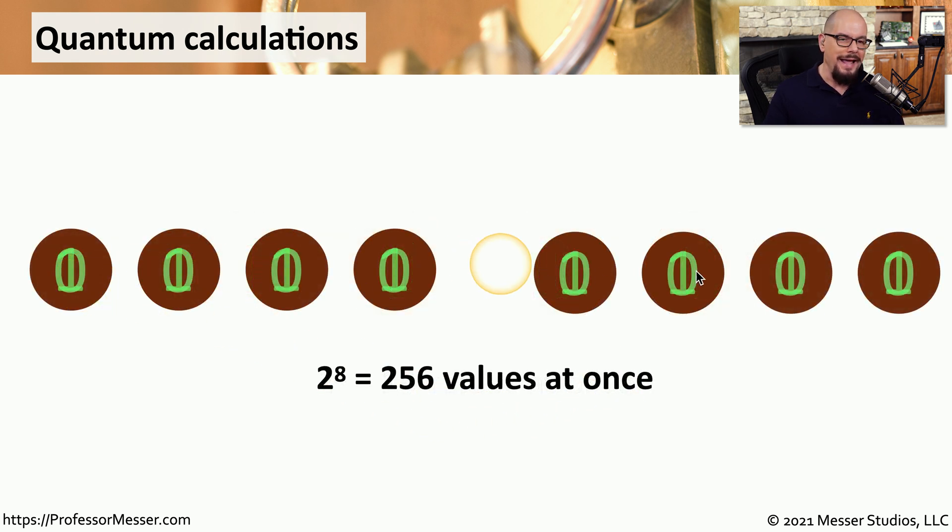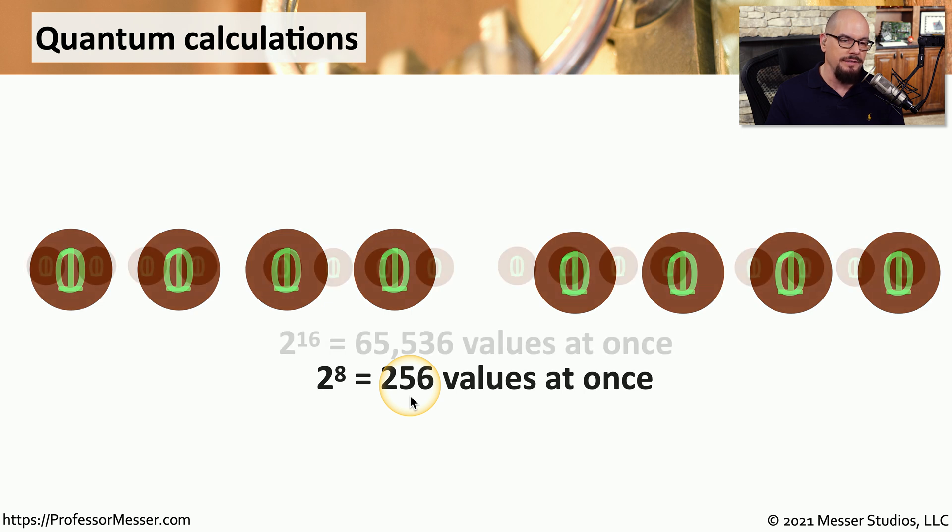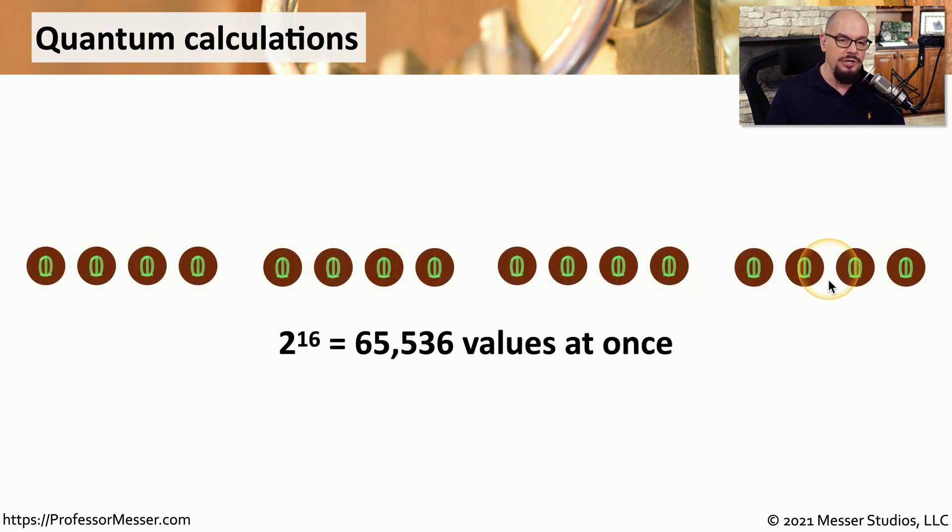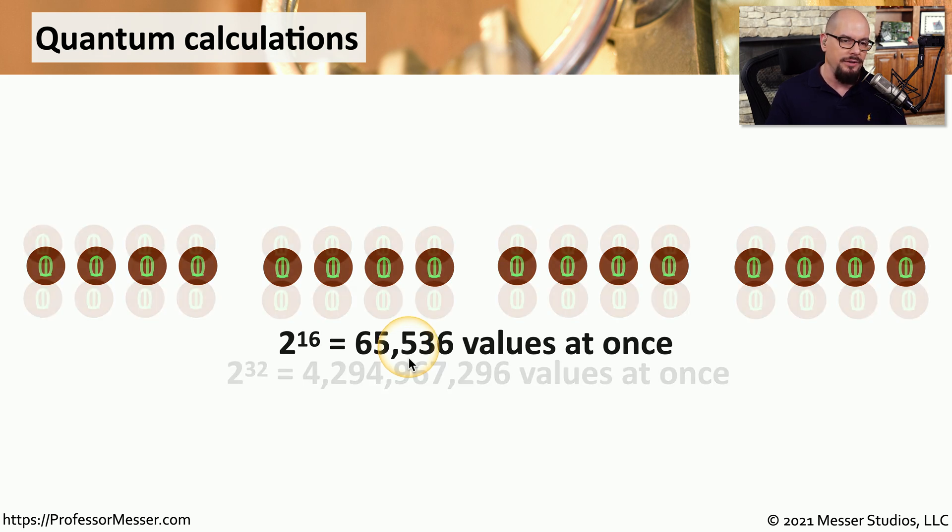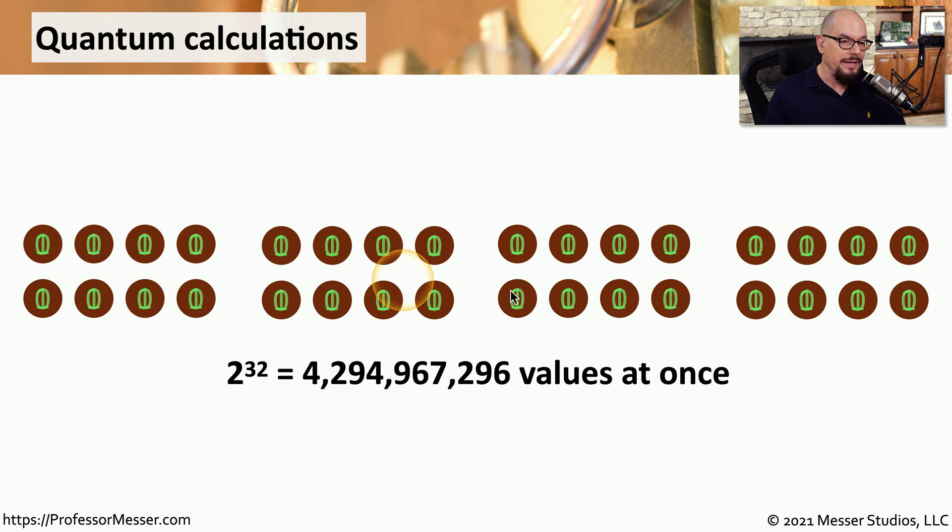For example, if we had eight different qubits, that would represent 256 values. If we had 16 qubits, that represents 65,536 values. And if we look at 32 qubits, we now have over 4 billion values that are represented by a relatively small number of qubits.